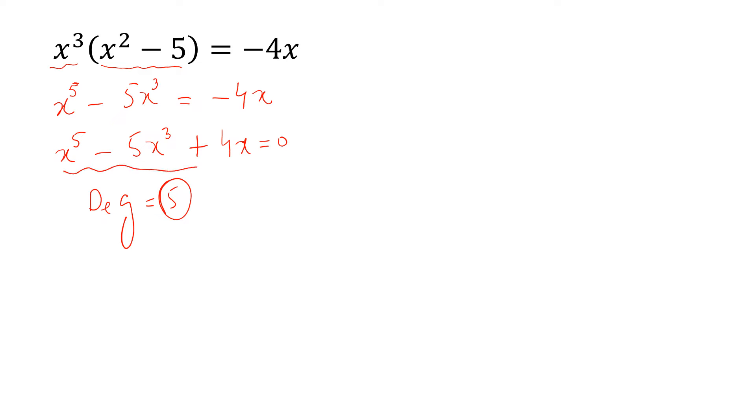We can take x common from this and we can get x into x power 4 minus 5x square plus 4 is equal to 0.